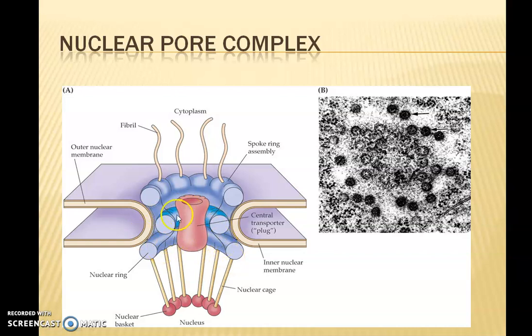These are the two rings — an outer cytoplasmic ring and an inner nuclear ring. Inside there is a hole, and this hole is plugged by the central plug which regulates the movement of molecules. The central plug regulates the inflow and outflow of transport and is connected to the rings by radial spokes.